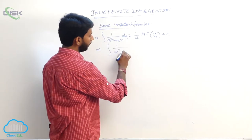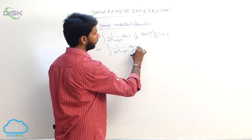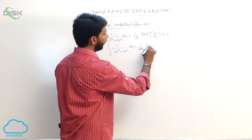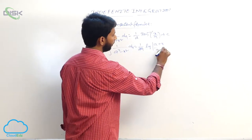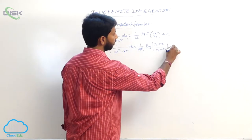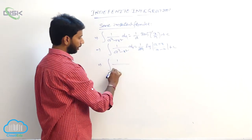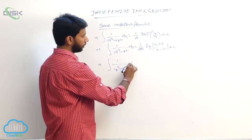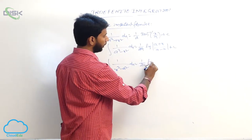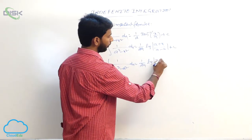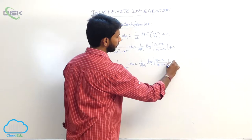Integral of 1 by a square minus x square dx is equal to 1 by 2a into log mod of a plus x by a minus x plus some constant. Integral of 1 by x square minus a square dx is equal to 1 by 2a into log mod of x minus a by x plus a plus some constant.